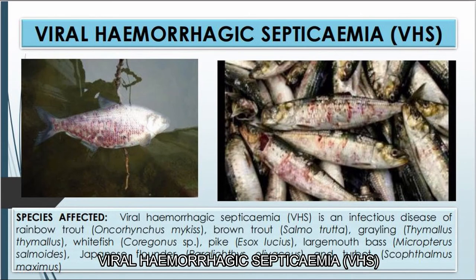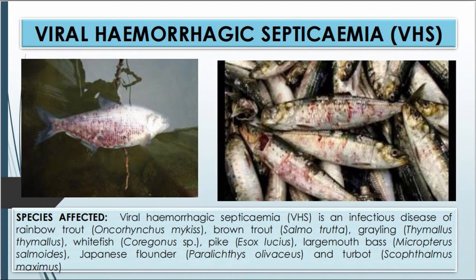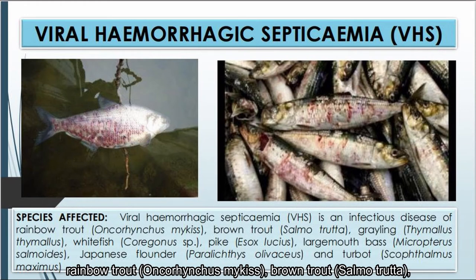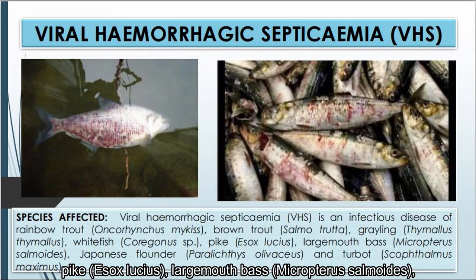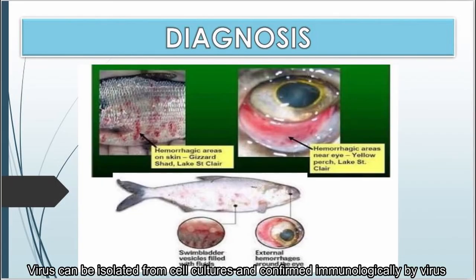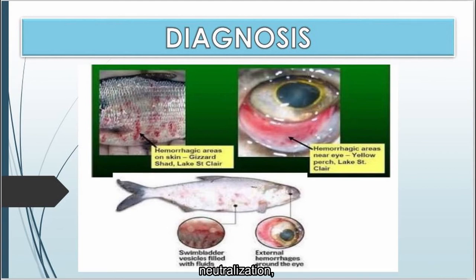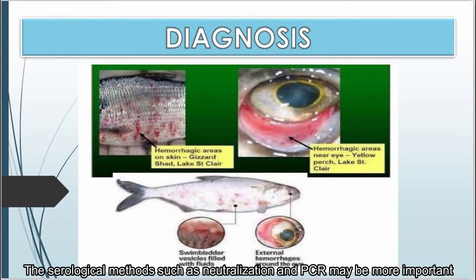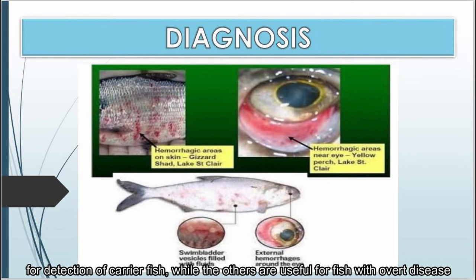Viral hemorrhagic septicemia (VHS) is an infectious disease affecting rainbow trout, brown trout, grayling, whitefish, pike, largemouth bass, Japanese flounder, and turbot. The virus can be isolated from cell cultures and confirmed immunologically by virus neutralization, immunofluorescence, ELISA, immunoperoxidase staining, or reverse transcriptase PCR. Serological methods such as neutralization and PCR may be more important for detection of carrier fish, while the others are useful for fish with overt disease.